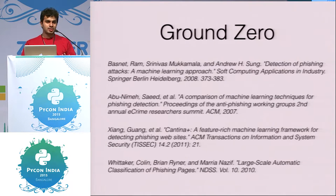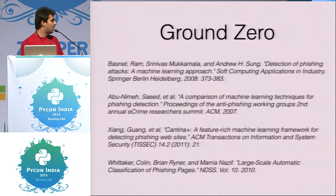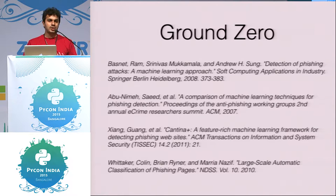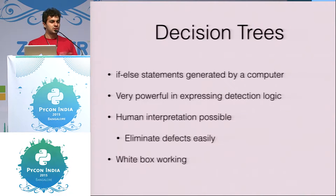Starting from ground zero, I looked at existing research on detecting phishing URLs, which led me toward machine learning. The most success I had was with extracting features from phishing URL and email datasets and running them through classifiers — particularly decision trees.